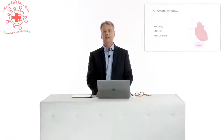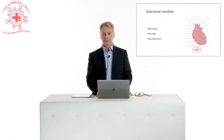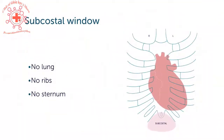The subcostal window — I sometimes call it the forgotten window because it's underutilized. Definitely the subcostal window should be a part of every exam. It's below the xiphoid where you're imaging from the abdomen towards the heart. The main advantage is that you have no ribs, no lung, and no sternum to obscure the view to the heart.